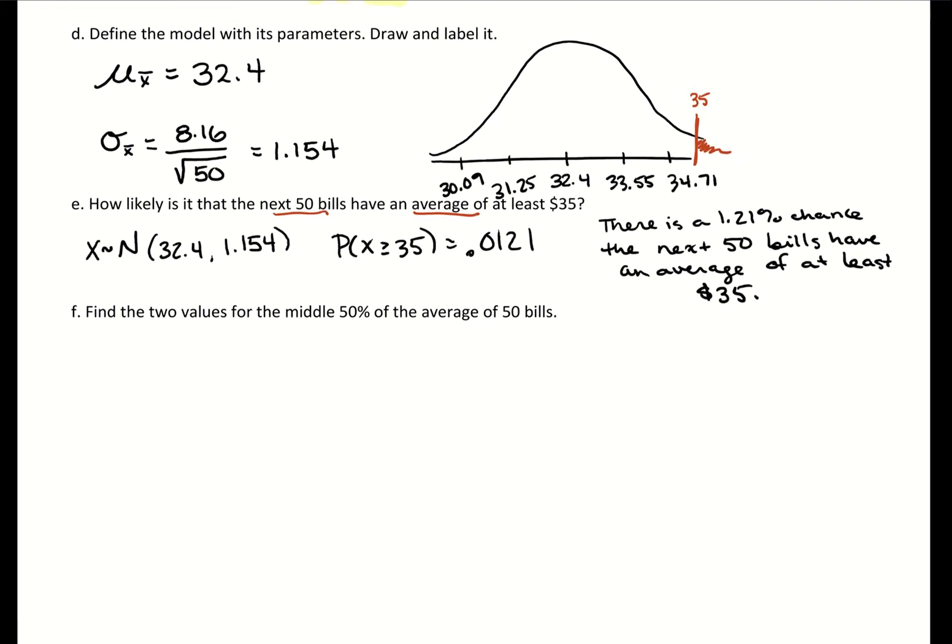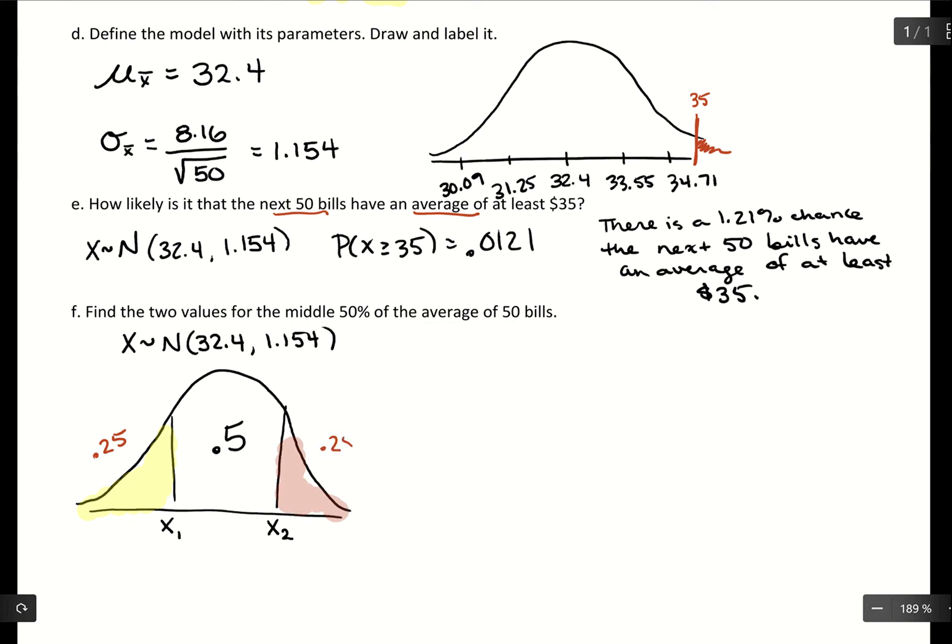Find the two values for the middle 50% of the average of 50 bills. We're asking, using this distribution of averages from a sample size of 50, what two bill values are going to be the bounds for that middle 50%? We're going to get two numbers out. In GeoGebra, you can't set area between two values, but you can use two separate areas. This area to the left, which is 0.25, and this area to the right, which is also 0.25. For x1, I'm looking for the probability of being less than or equal to some number, and that area should equal 0.25.